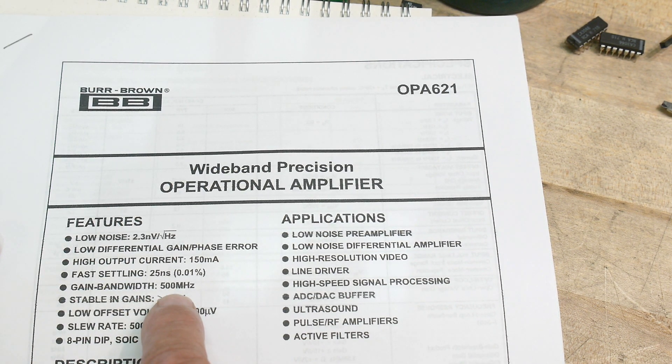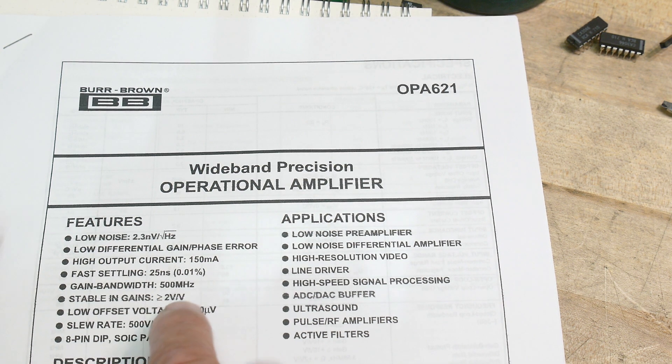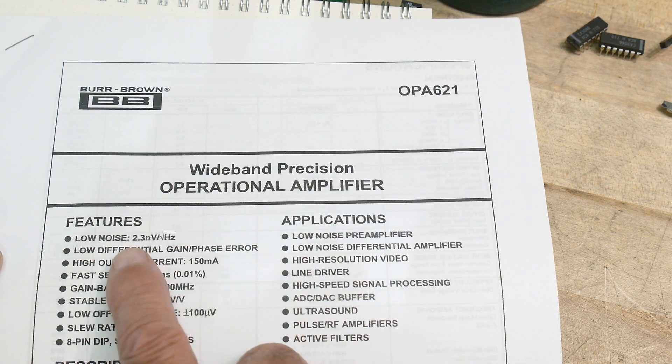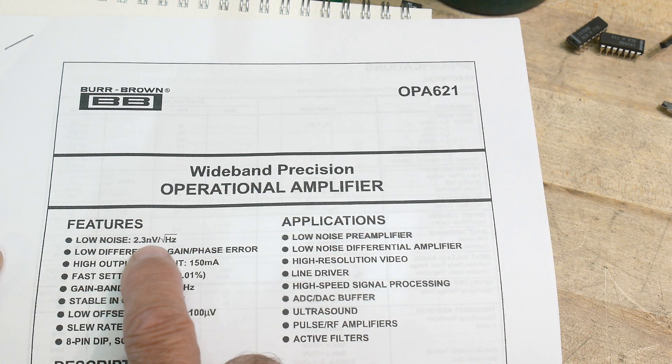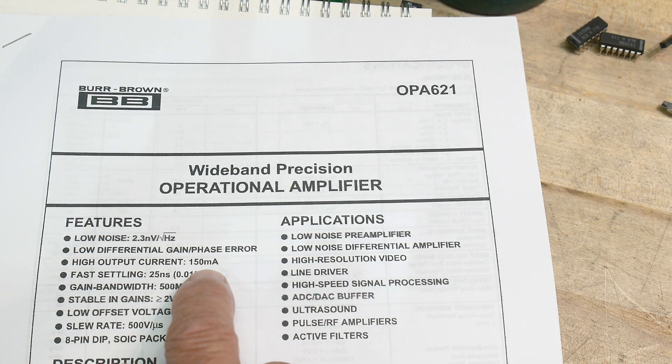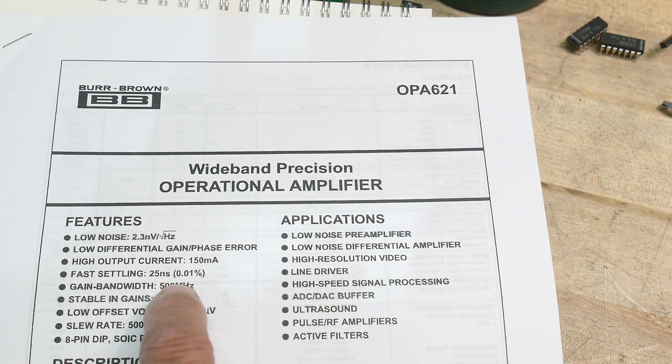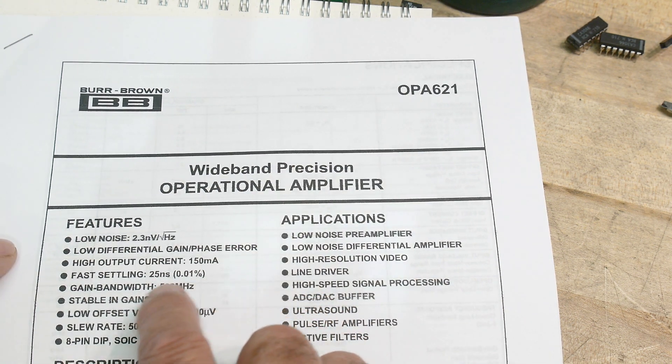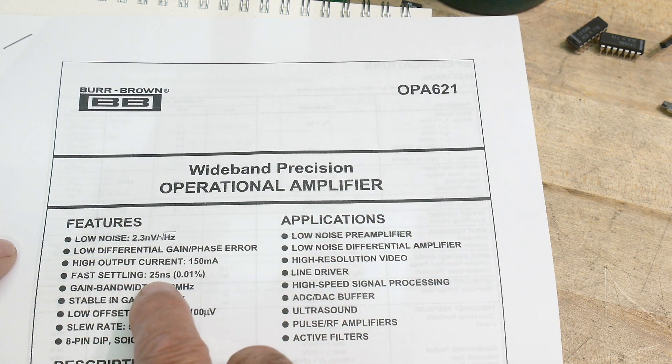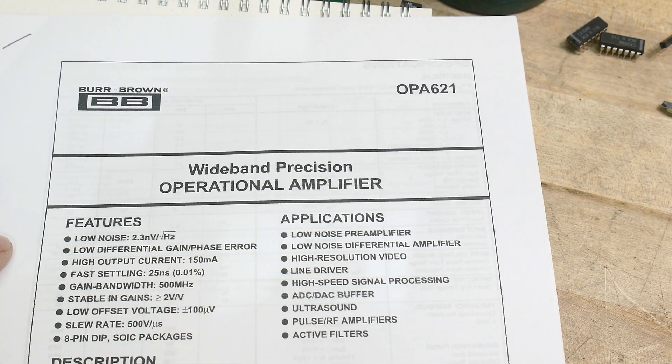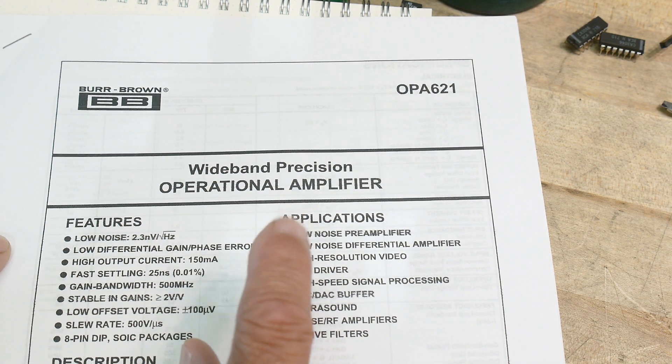Applications include low noise with 2.3 nanovolts per root hertz, high output current of 150 milliamps capable of driving 50 ohms, and fast settling time of 25 nanoseconds. This is a really nice part. I haven't checked the price yet.